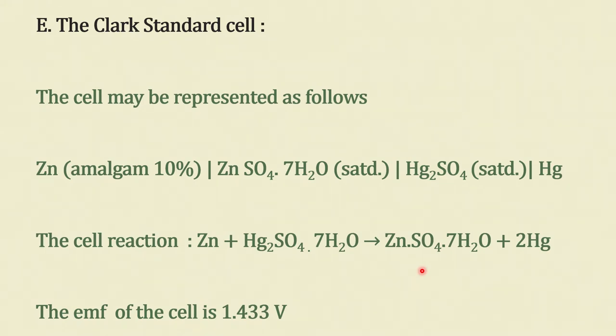The Clark standard cell is represented as: zinc amalgam (zinc-mercury amalgam) as cathode | zinc sulfate || mercuric sulfate | mercury as anode. The cell reaction is Zn + H₂SO₄ → ZnSO₄ + H₂O + Hg. The EMF is 1.433 volts — compared to the zinc-copper cell at 1.1 volts. By using amalgam and H₂SO₄ as the anode, the voltage can be increased to 1.4 volts.